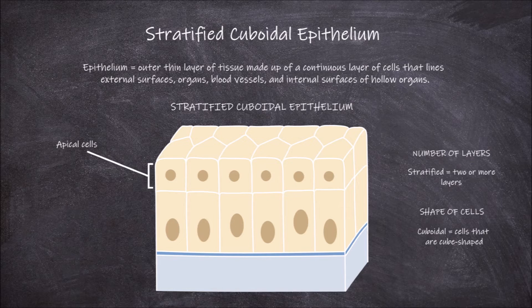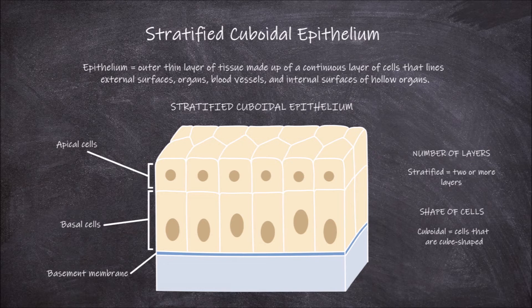Only one layer, the lowest layer, known as the basal cells, sits on the basement membrane. These basal cells divide, replacing the cells above them as the ones at the top get sloughed off or die.